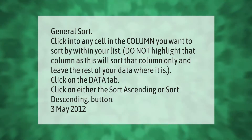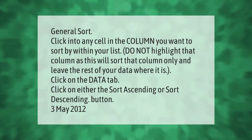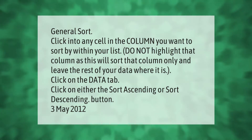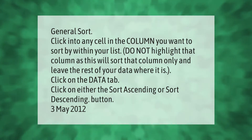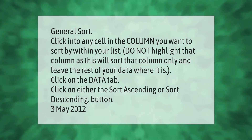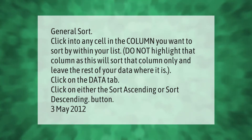For a general sort, click into any cell in the column you want to sort by within your list. Do not highlight that column, as this will sort that column only and leave the rest of your data where it is. Click on the Data tab, then click on either the Sort Ascending or Sort Descending button.